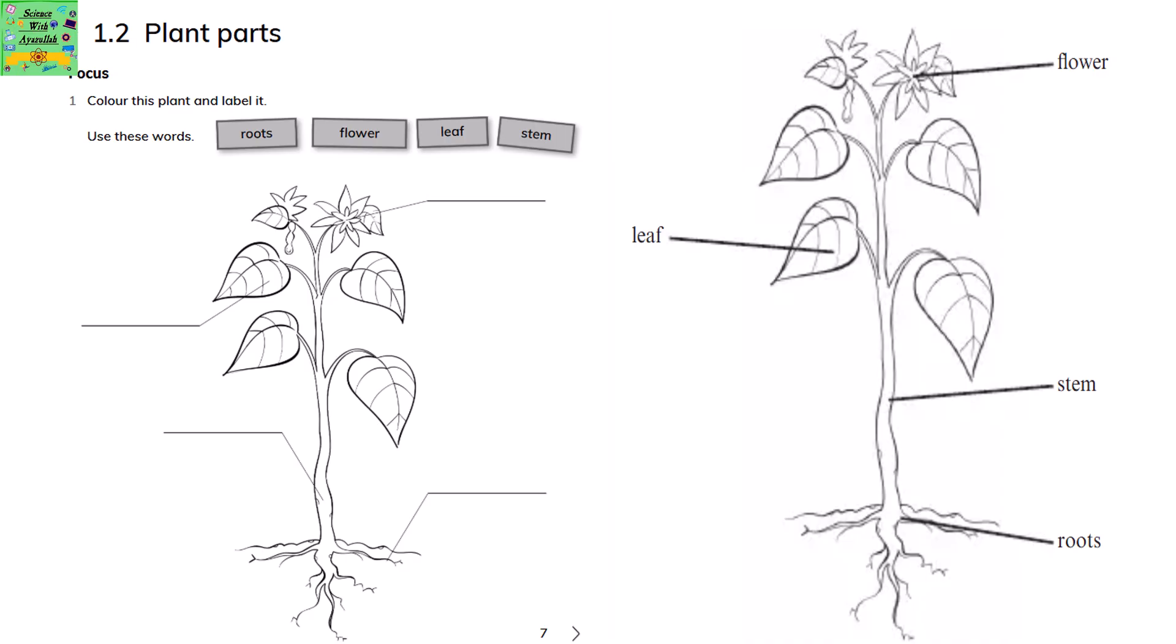Plant parts. Color this plant and label it. Use these words: roots, flower, leaf and stem.